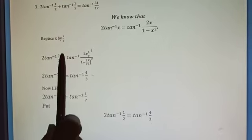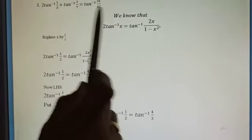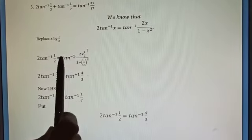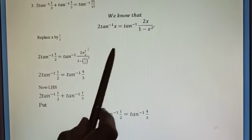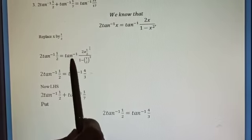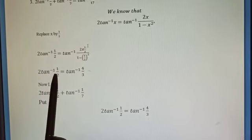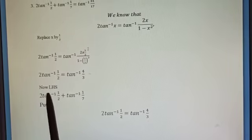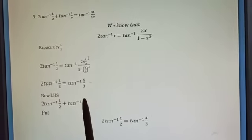So 2·tan⁻¹(1/2) = tan⁻¹(2·(1/2) / (1 - (1/2)²)) = tan⁻¹(1 / (1 - 1/4)) = tan⁻¹(1 / (3/4)). On simplifying, this gives tan⁻¹(4/3). Therefore, 2·tan⁻¹(1/2) = tan⁻¹(4/3). The left-hand side becomes tan⁻¹(4/3) + tan⁻¹(1/7).